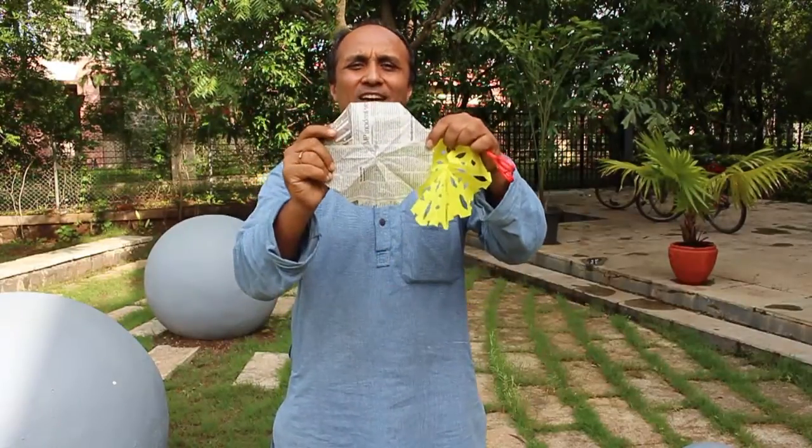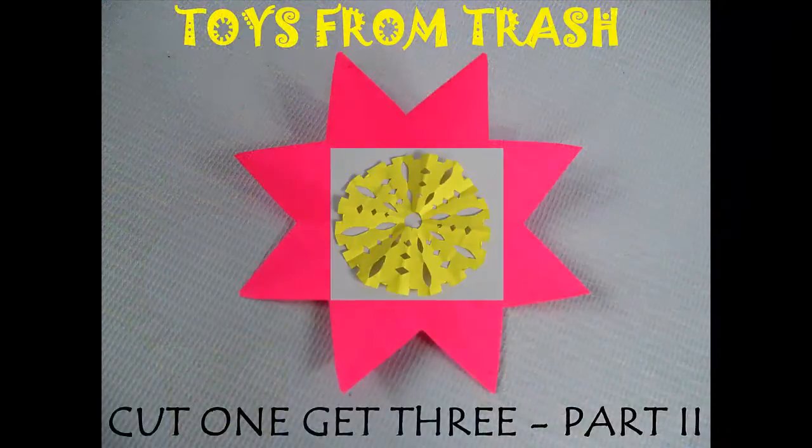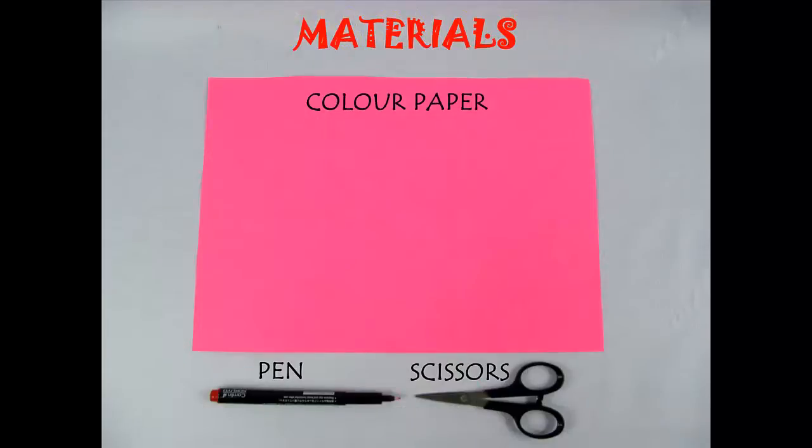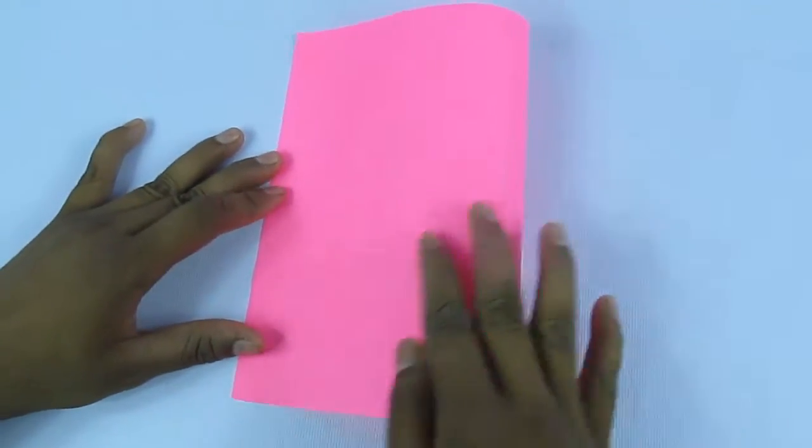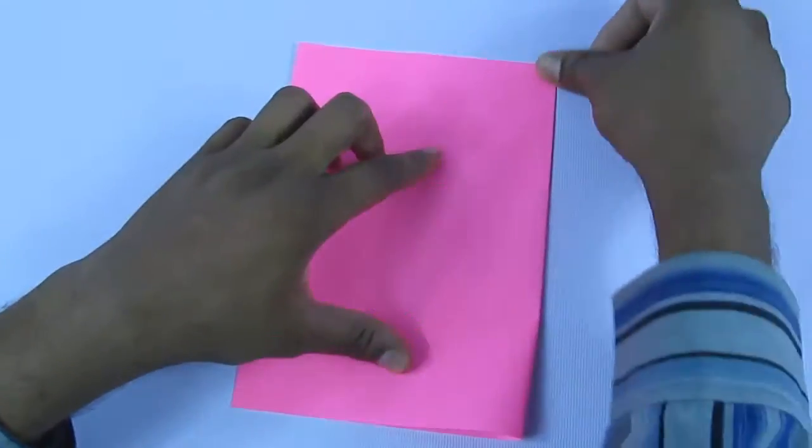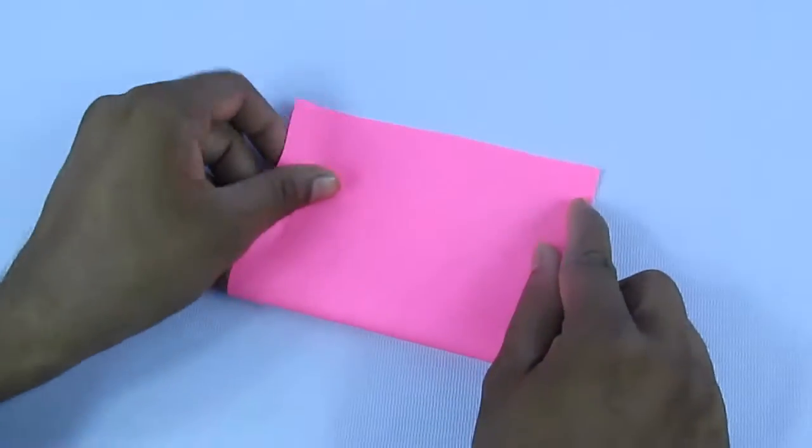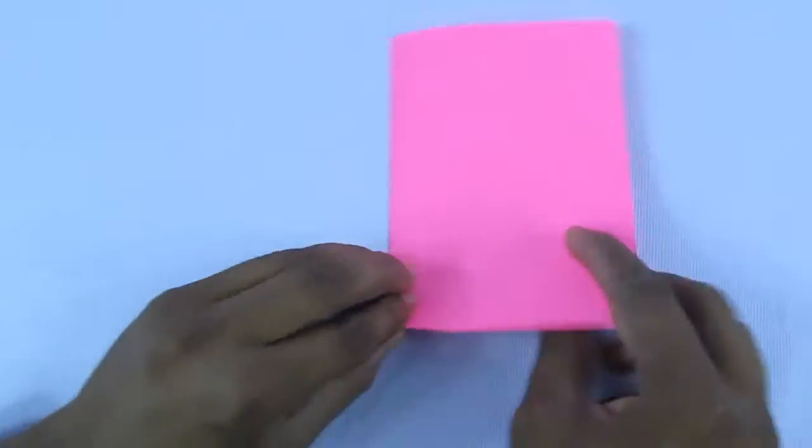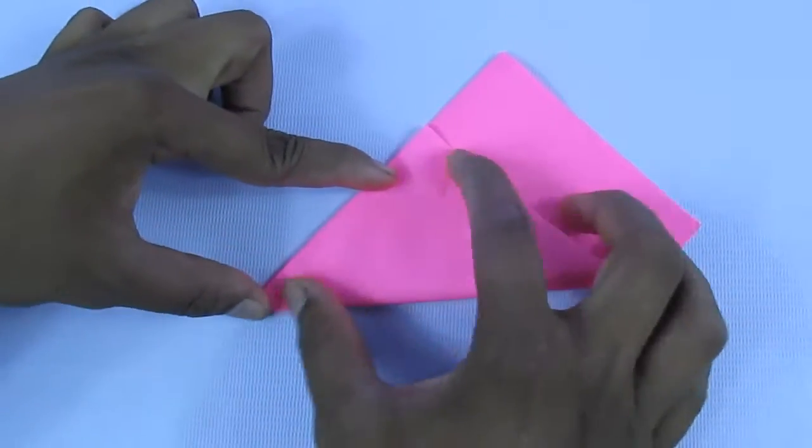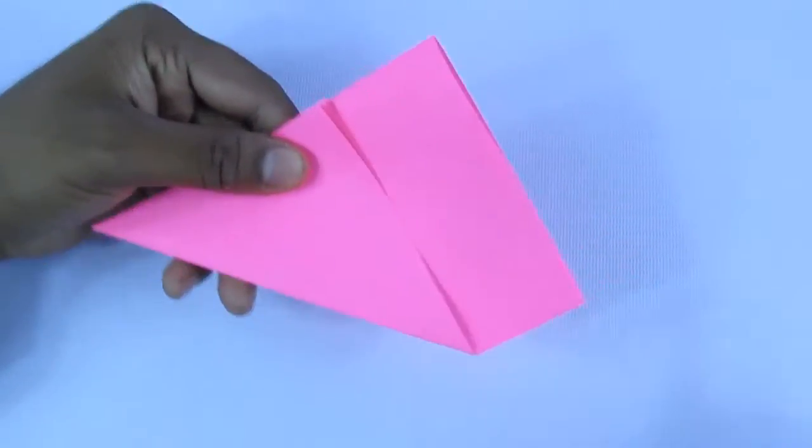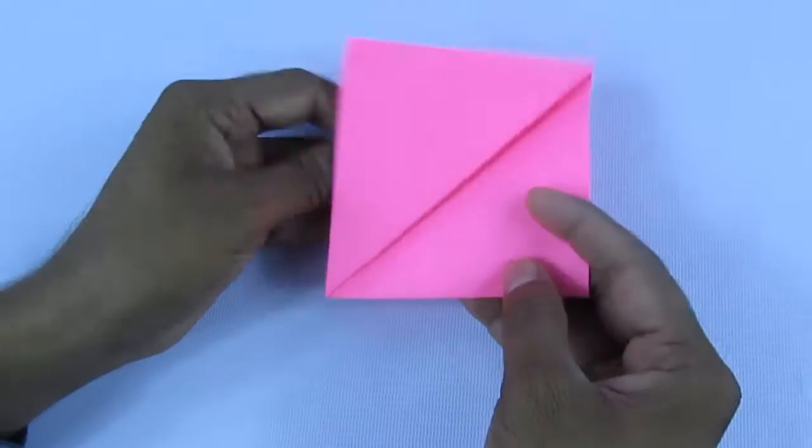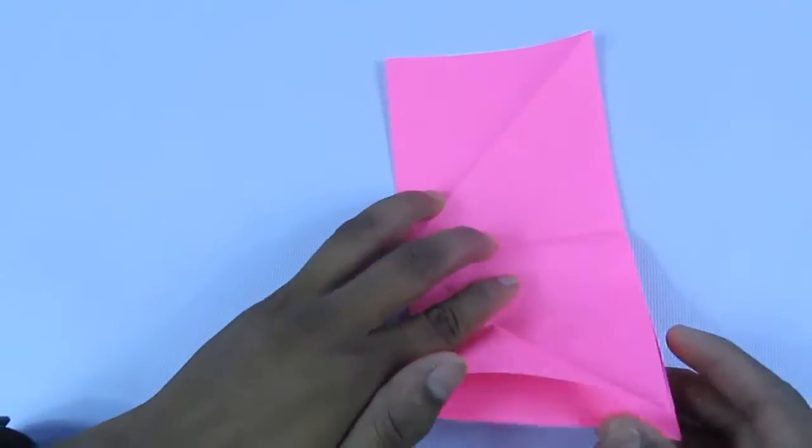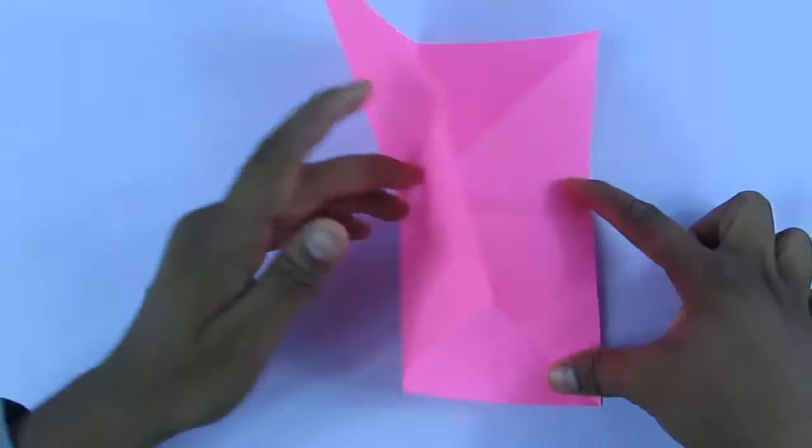This is our octahedron. We will first fold the paper in half along the length, then fold again from the middle. We will fold it twice more to make a 45-45-90 triangle. We have now divided this paper into eight equal parts.